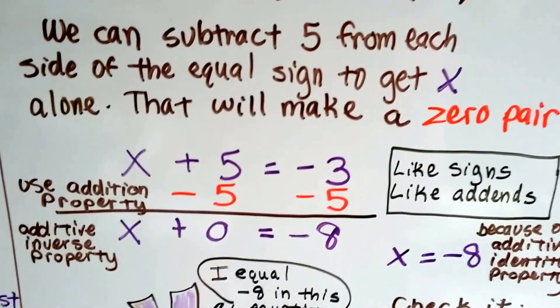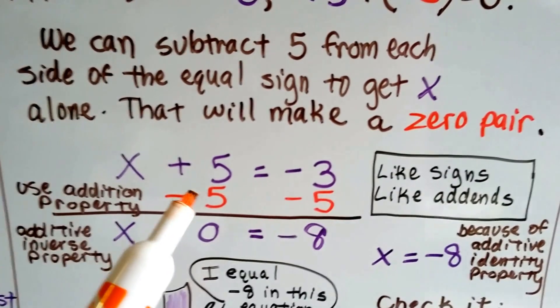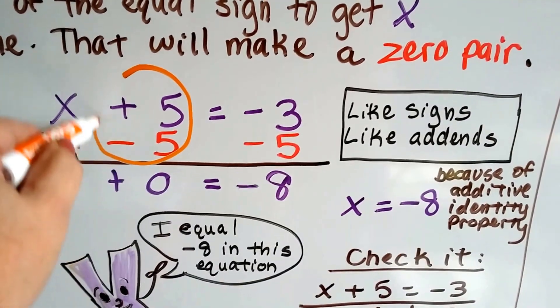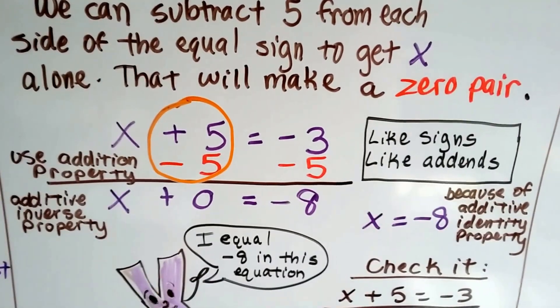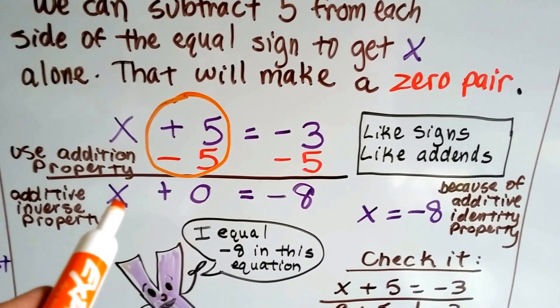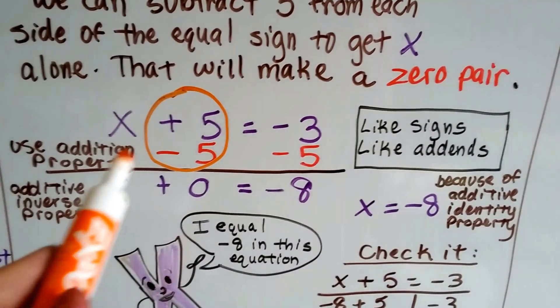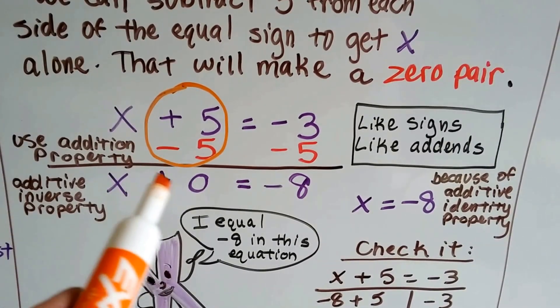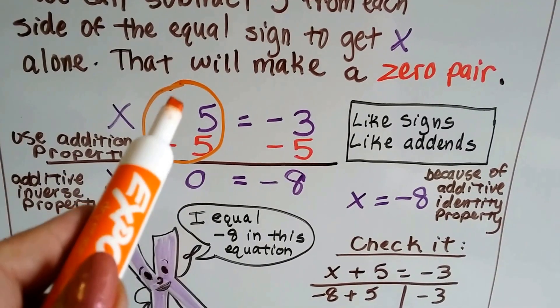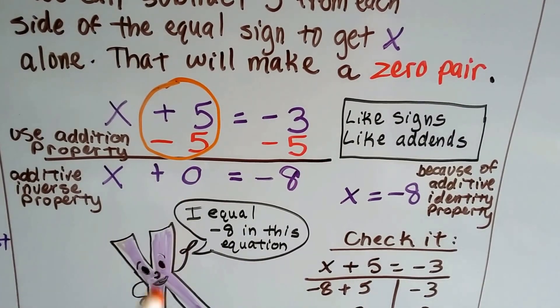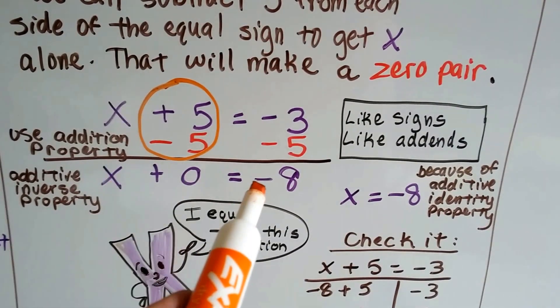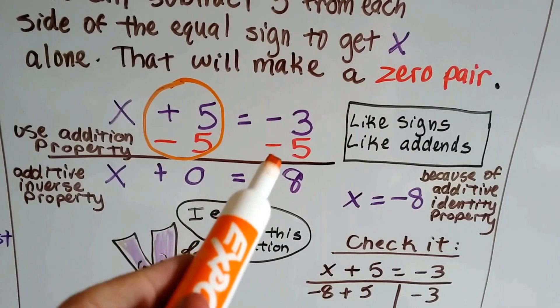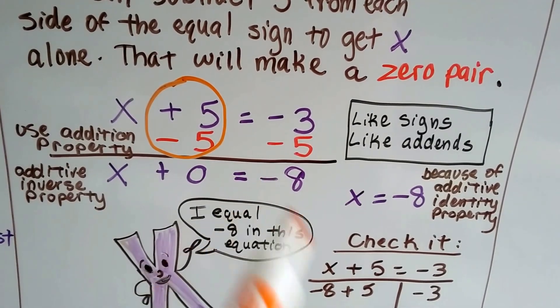So take a look at this. We've got x plus 5 equals negative 3. If we take 5 away from both sides, right here, this is going to create our zero pair. See? Plus 5 minus 5. What's going to happen is we're going to get x by itself on the left side of the equation. This is using the addition property and the inverse property. See? Because negative 5 is the inverse of positive 5, that's going to get us a zero. And this is going to equal a negative 8. Because remember, when you're adding like signs, you use the sign like the add-ins, like signs, like add-ins. So it's going to be a negative 8.